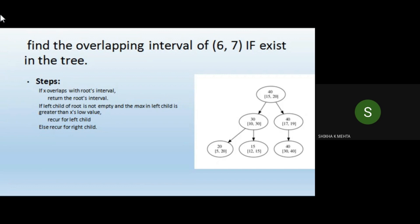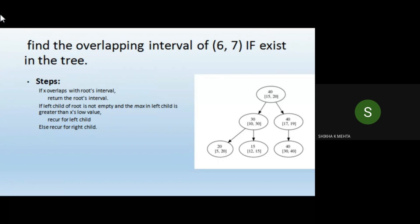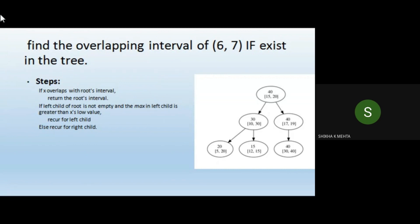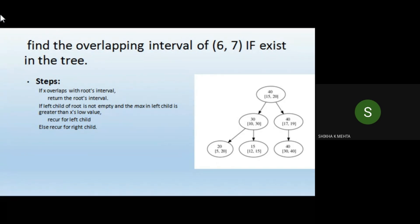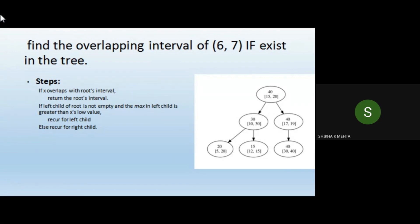We traverse the left subtree. We move to node 10-30 — it is not overlapping. Since this is recursive code, 10-30 is now the parent node. We check the max value in its left child, which is 20, and that is greater than 6, so we traverse to the left again. Now we see the range 5 to 20, which overlaps with 6 to 7, so we have found the solution and can directly return this range.